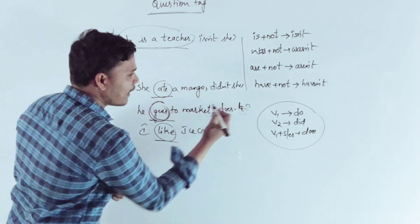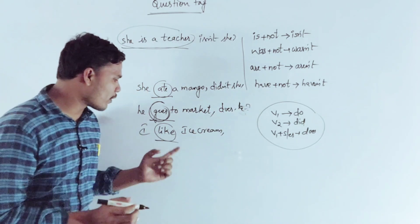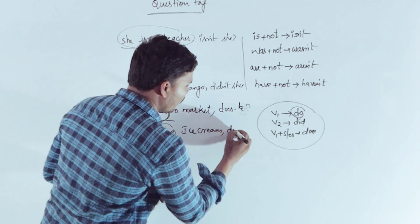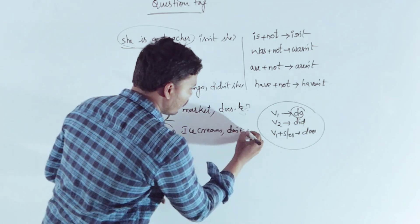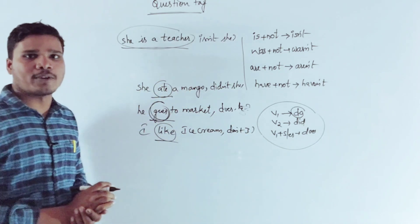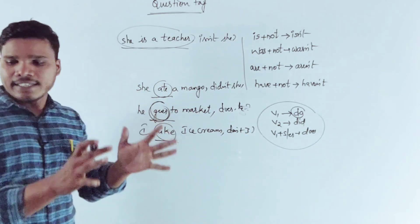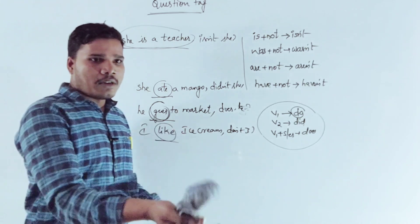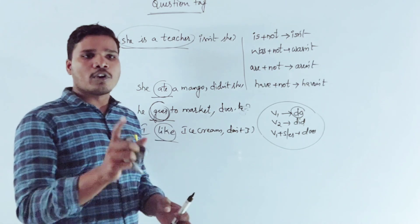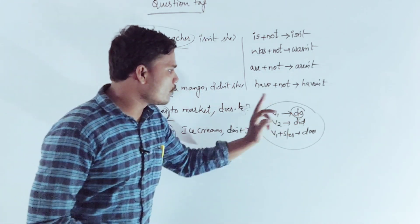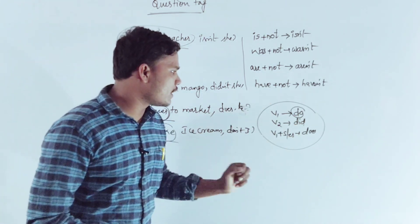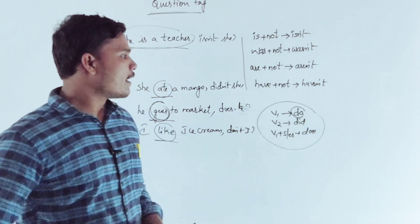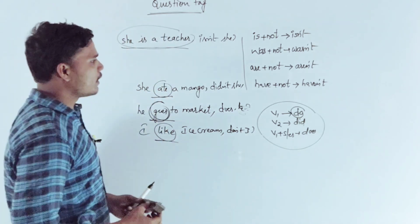'I like ice cream' — again, no helping verb, so we use a do-form. The question tag becomes 'don't I.' Do-forms: do, don't, does, doesn't — these are used when the main verb is a base verb.